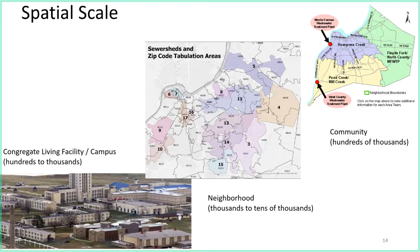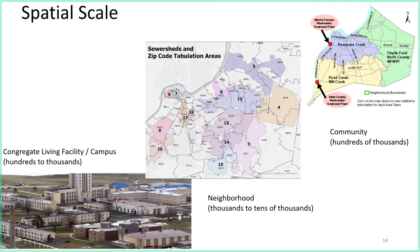We have 12 catchment areas defined across Jefferson County that we've been following since July 2020 on a weekly basis, and often multiple times a week. At the crudest level of analysis, you just go to the wastewater treatment plant — where all the wastewater ends up — and do your sampling there. That's actually how this field works across most of the United States. If you've seen news stories about sewage surveillance in Boston, that's coming from a wastewater treatment plant.